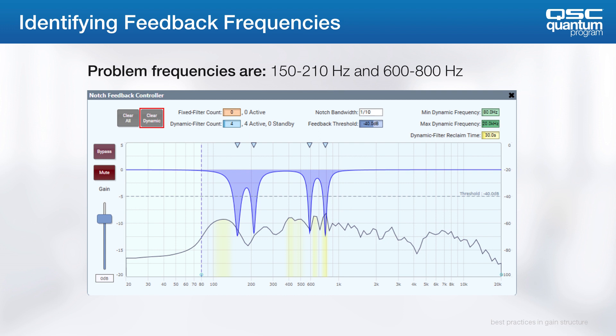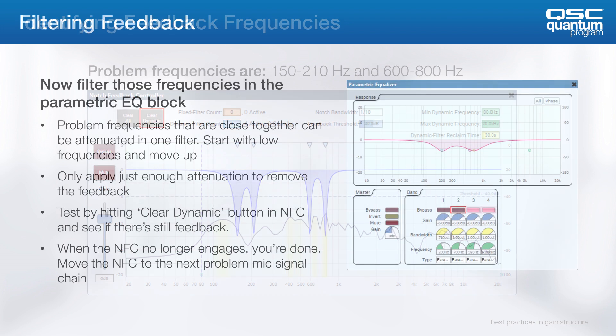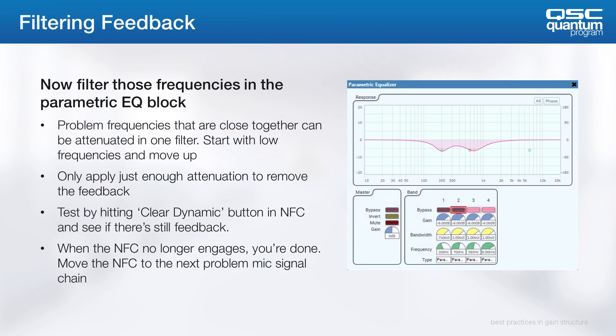In this example, you see feedback in two specific ranges. After you're finished, we do not generally recommend leaving these in the signal path, as you typically reserve them for use in very difficult environments. It's more effective to use this as an analysis tool, and then create a parametric EQ that's a bit more gentle, to help mitigate those frequencies without affecting too much of the overall tone.